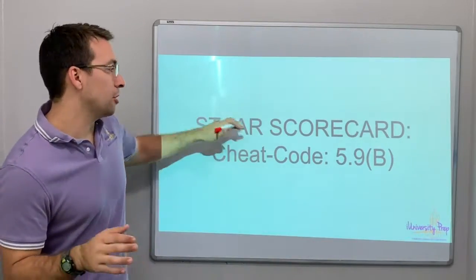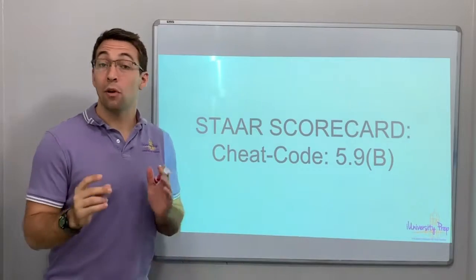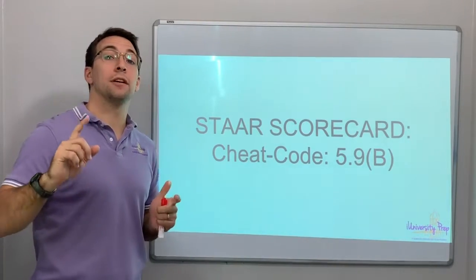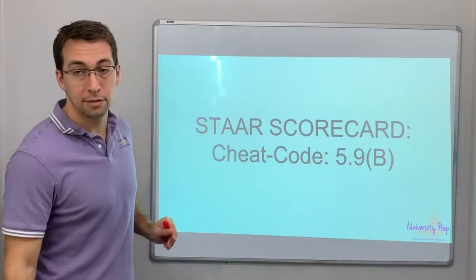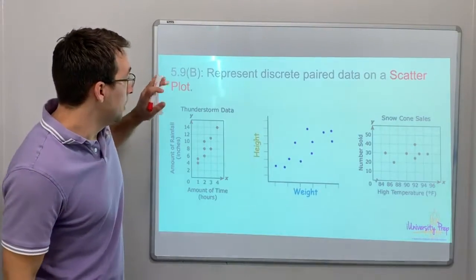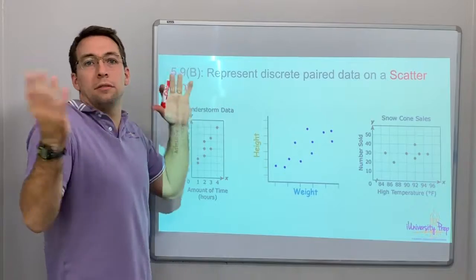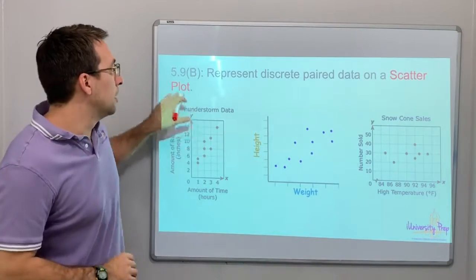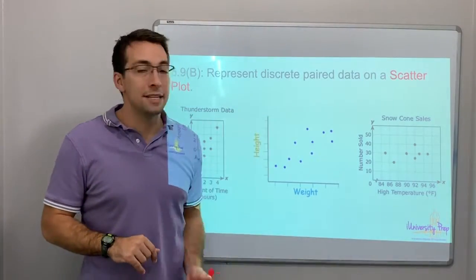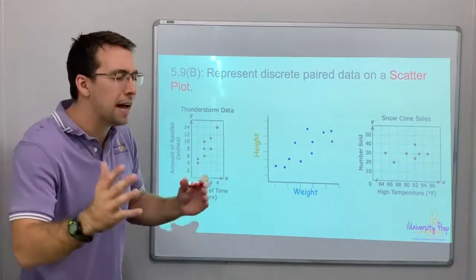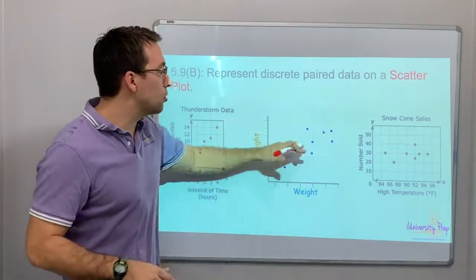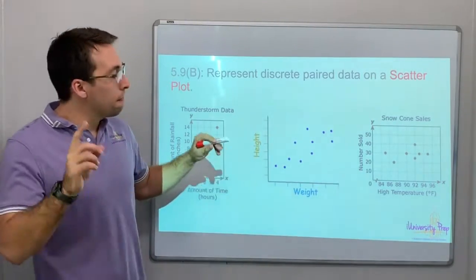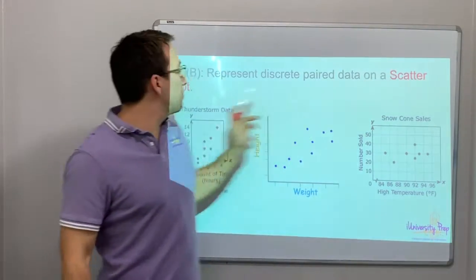Hello again. Star Scorecard 5.9b. We're only going to have one video for this cheat code. There's going to be three practice problems, but one video. What's the cheat code? What are we doing here? We're representing discrete paired data on a scatter plot.